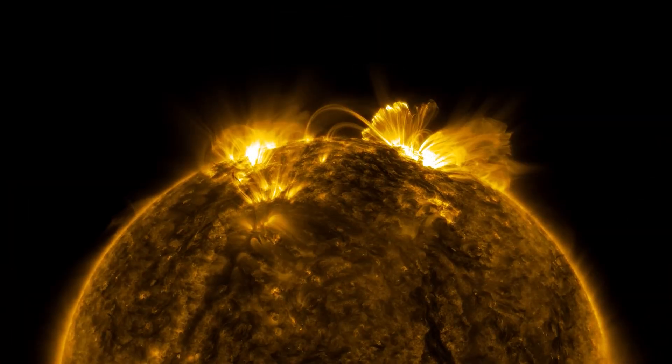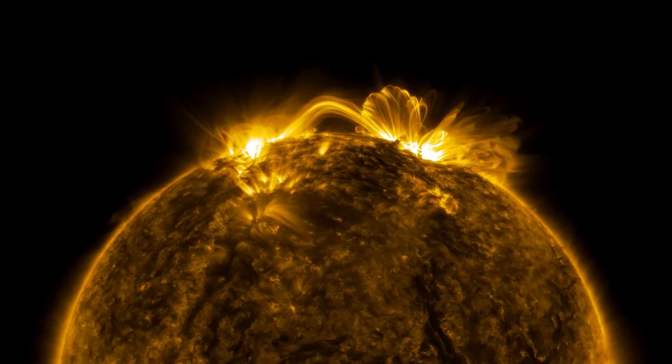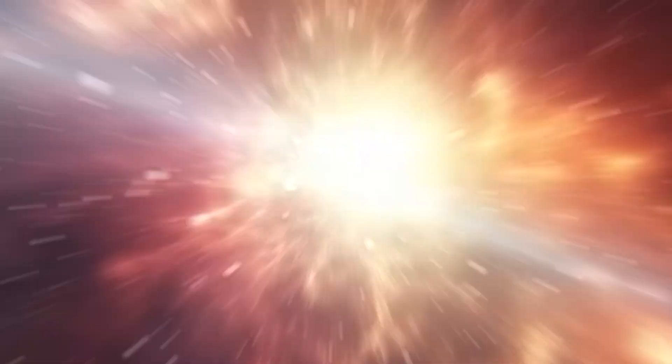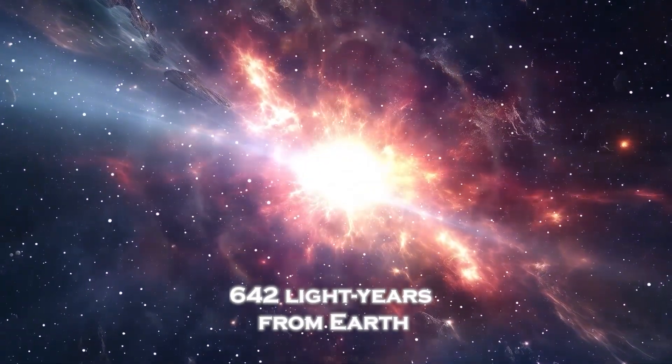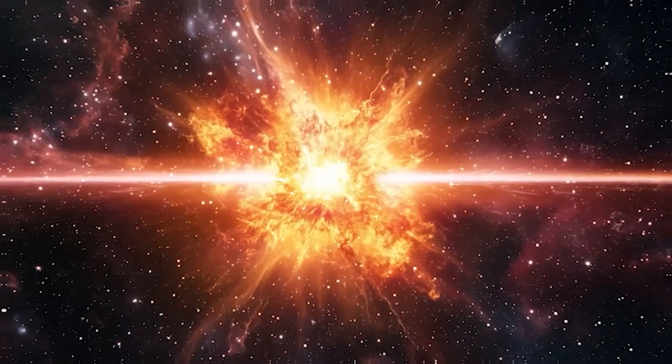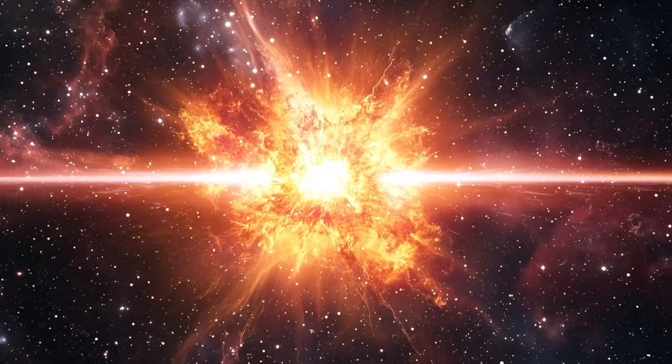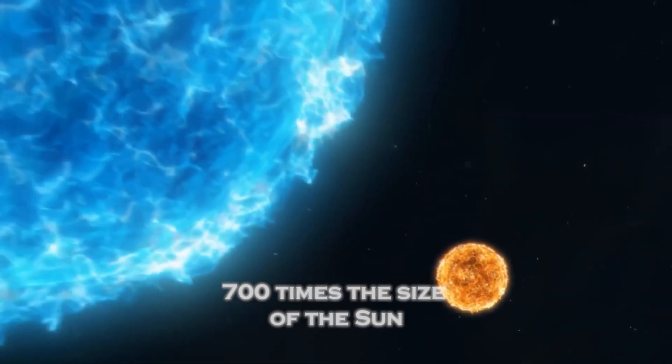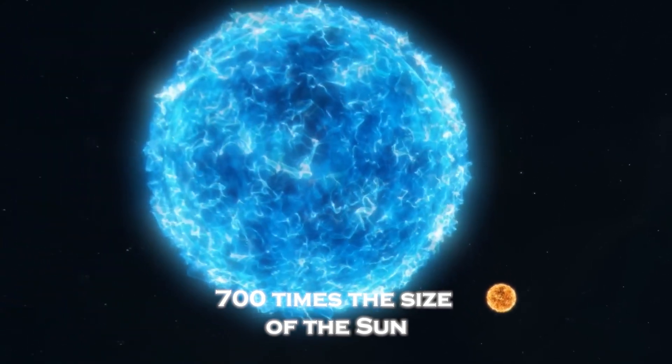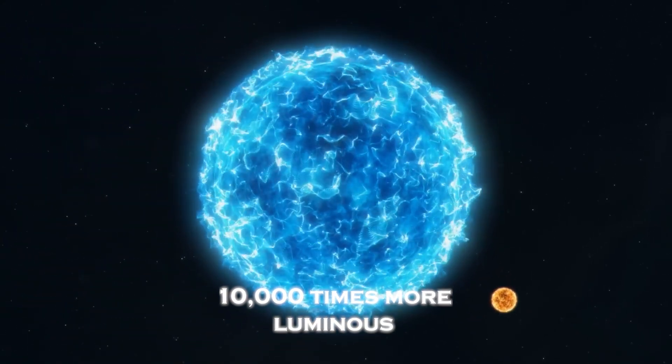Betelgeuse is a red supergiant, a type of star in the final stages of its life cycle. Located about 642 light years from Earth, it is one of the largest and brightest stars in the Milky Way, about 700 times the size of the Sun and more than 10,000 times more luminous.